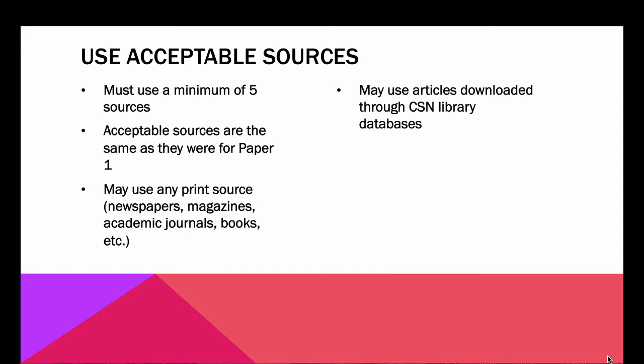Of course, all the articles you can download from the databases are fine. You have to use at least one book again, and it can be an anthology — a book that has different chapters written by different people. Each chapter written by a different person is considered a separate source, so anthologies are really good sources to use and would definitely count as a book. I can tell it's a book by the way the works cited entry is set up, so don't worry about that.